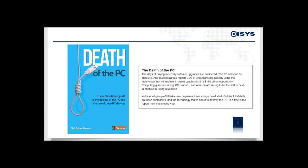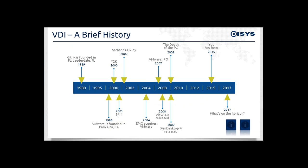In 2009, the internet was buzzing with the death of the PC and the advent of cloud computing. Everyone from IBM to Yahoo to Amazon, 3PAR, and Rackspace were getting in on the act — it was going to be a $160 billion industry. It's no coincidence that in late 2009, Citrix released its VDI offering, XenDesktop 4, and the VDI arms race ensued. View 4 was released, followed by View 5. Citrix then released XenDesktop 5, then XenDesktop 6, and then XenDesktop 7.